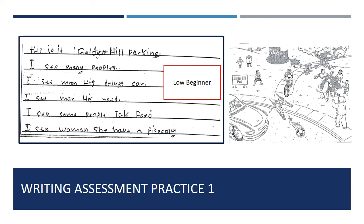Here's a chance to practice assessing some writing. This is a student writer at the low beginner level. On the right you'll see a picture — the writing prompt used at LearningWorks to assess writing for new students. It's a picture of a park with many events and people doing various activities, and students are asked to describe the picture in the best way they can. Take a moment to read the writer's response on the left and consider: what has this writer done successfully? What accomplishments from the low beginner writing traits list have they checked off? Similarly, what are their areas of challenge? Take a moment to do this on your own, then go to the next slide to cross-check your responses.